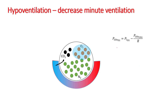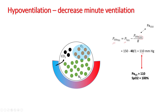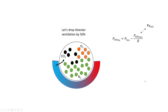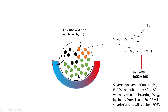Alveolar oxygen levels depend upon how much you inspire and the level of CO2. In a normal person, your partial pressure of inspired oxygen is around 150, your alveolar CO2 is around 40, so your alveolar PaO2 is around 110, which exchanges well with the capillaries, giving an arterial PO2 of 110 and saturation of 100%. If we drop alveolar ventilation by 50%, carbon dioxide levels in the alveoli will double to 80, and when you subtract that, your PaO2 will be 70, corresponding to around 90% saturation. Even by halving alveolar ventilation, your SpO2 has not dropped significantly.